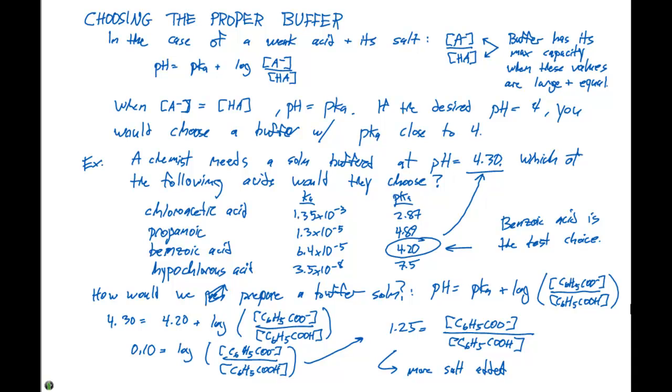We can really prepare these in any type of ratio, but remember we want these values to be fairly large. We're not going to prepare a really small concentration, but the ratio of our C6H5COO- ion has to be 1.25 times the concentration of our benzoic acid.